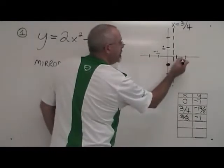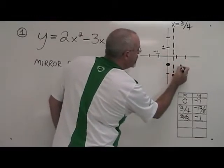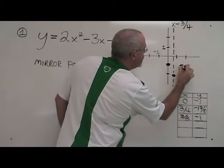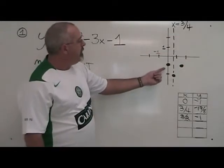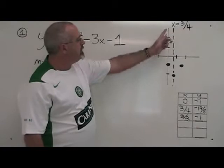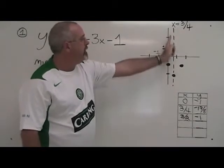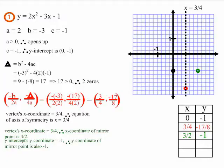1 and a half is here, and negative 1 is here, so our mirror point is right here. We can see that the mirror point is symmetrical across the mirror created by our axis of symmetry to the y-intercept. This is what example one looks like after we find the mirror point.